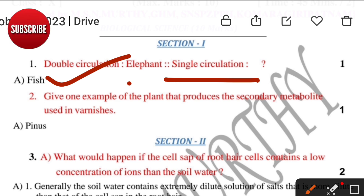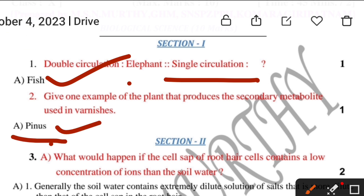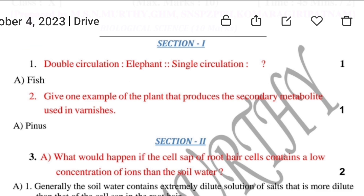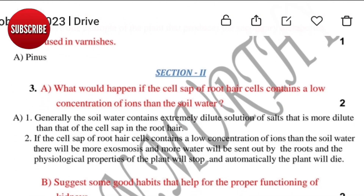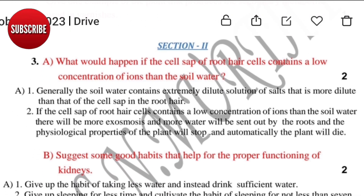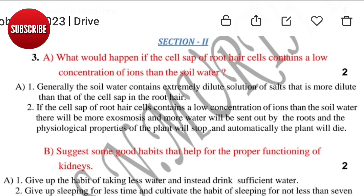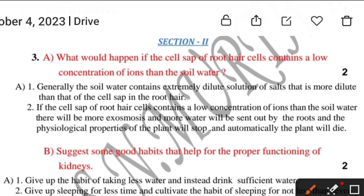Give one example of the plants that produce secondary metabolites. Pinus can produce varnish. So the answer is Pinus.